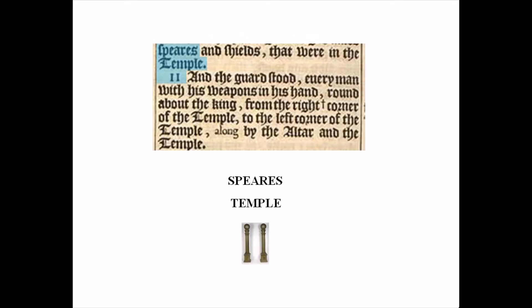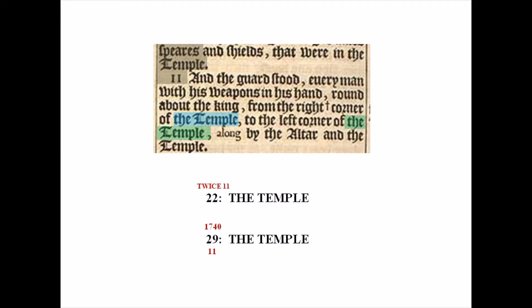Now check verse 11. Right above it are the words 'Temple' and 'Spears' — Spears Temple 11. The number 11 can represent the twin pillars of Solomon's temple, Jachin and Boaz, and here they are just below 'Spears Temple.' Again, 11 is written like Roman numeral 2, so 2-11 can mean twice 11, and Edward de Vere was Shakespeare. If we then start counting, words 22 and 29 both read 'the Temple.' 22 is literally twice 11, and 29 is 17 plus mem, or 1740, and 2 plus 9 equals 11.